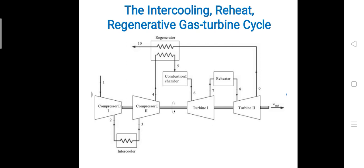In this arrangement there are two sets of compressors and two sets of turbines. In between the compressors there is an intercooler. In between the compressor and turbine there is a combustion chamber. In between turbine to turbine there is a reheater. The output of the second turbine enters the regenerator.